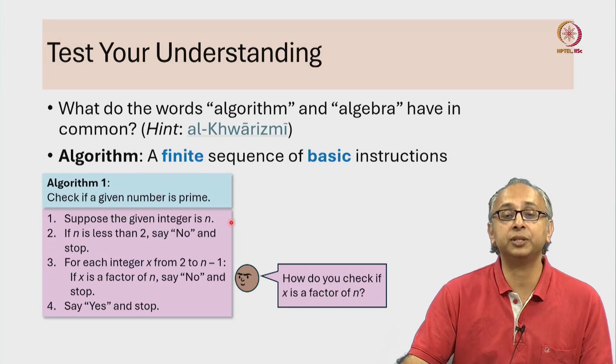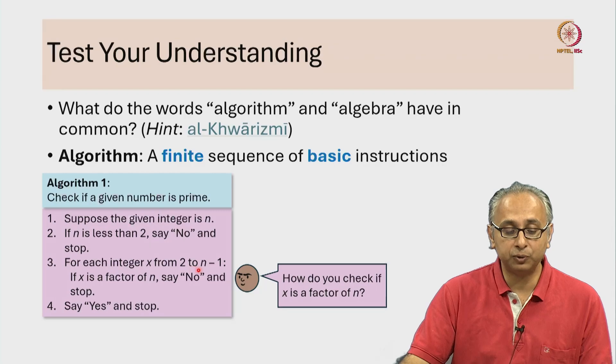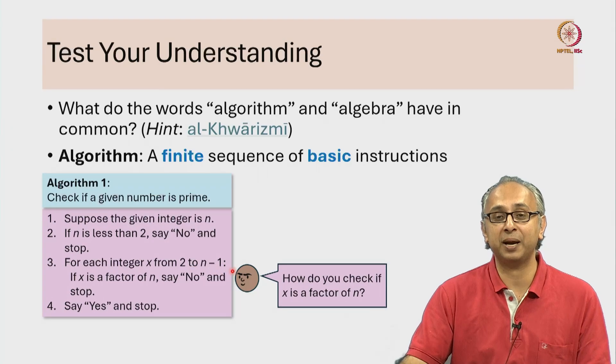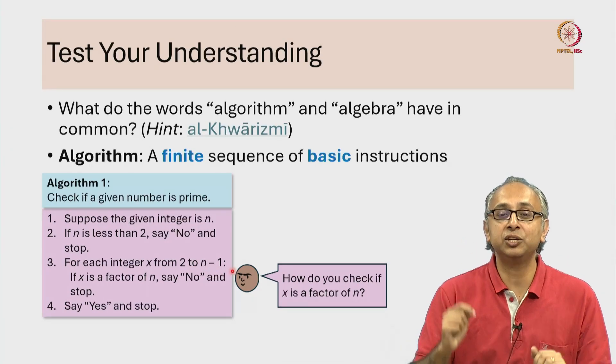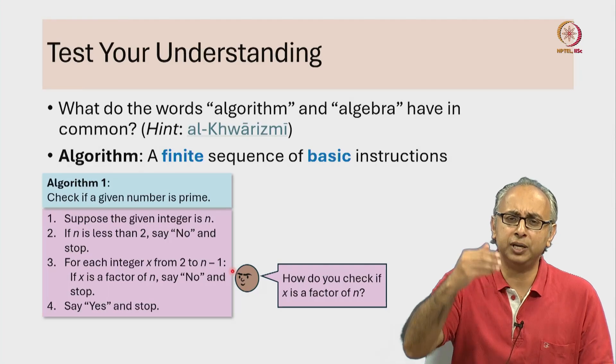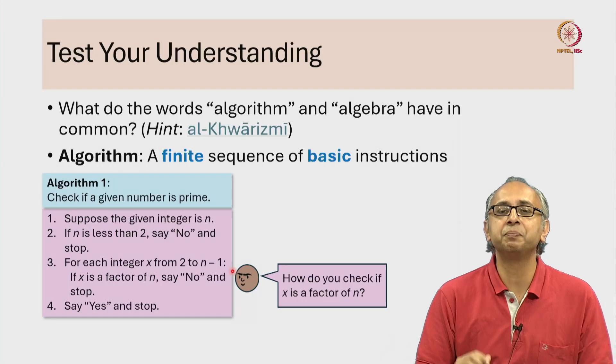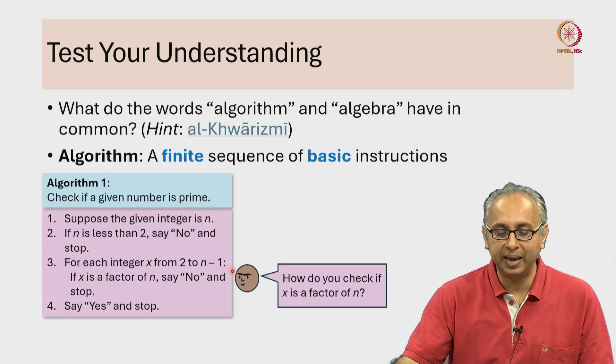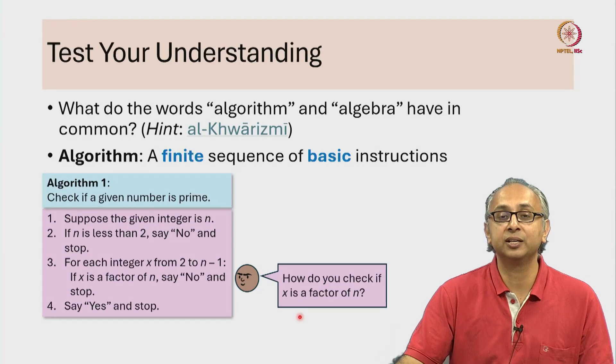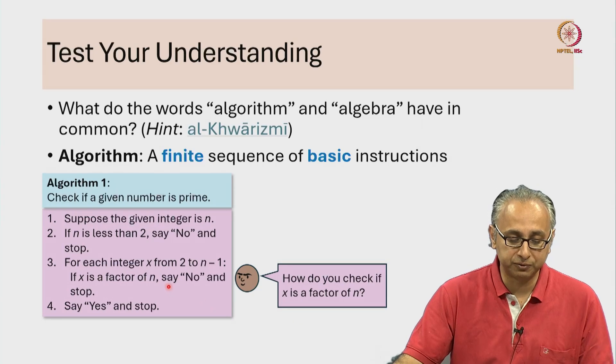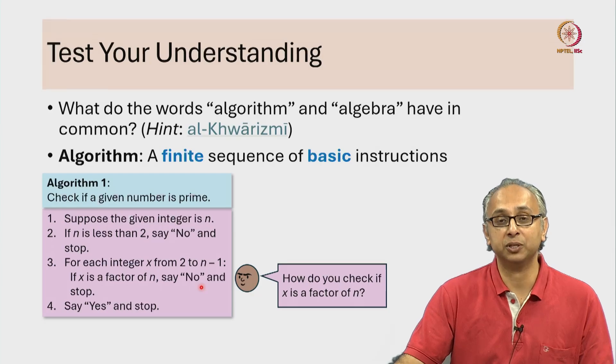Because once you tell me what the integer n is, this range from 2 to n minus 1 is fixed and for each integer in that range 2, 3, so on all the way up to n minus 1, we are only doing a basic check to see if x is a factor of n and of course if it is, we say no and we stop.